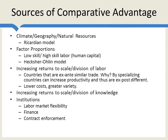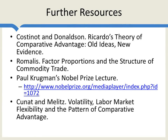So, for all of these reasons — climate, factor proportions, increasing returns to scale, division of knowledge, and institutions — these are all sources of comparative advantage. Here are some further resources on Ricardo's theory of comparative advantage and factor proportions. Here's Paul Krugman's Nobel Prize lecture, which is quite accessible and recommended. You'll also see it in our list of lectures. Thanks very much.